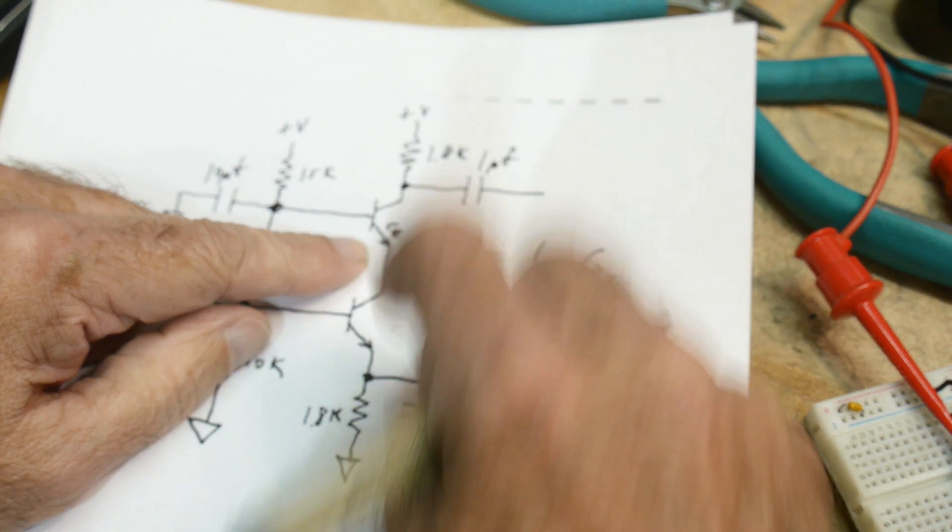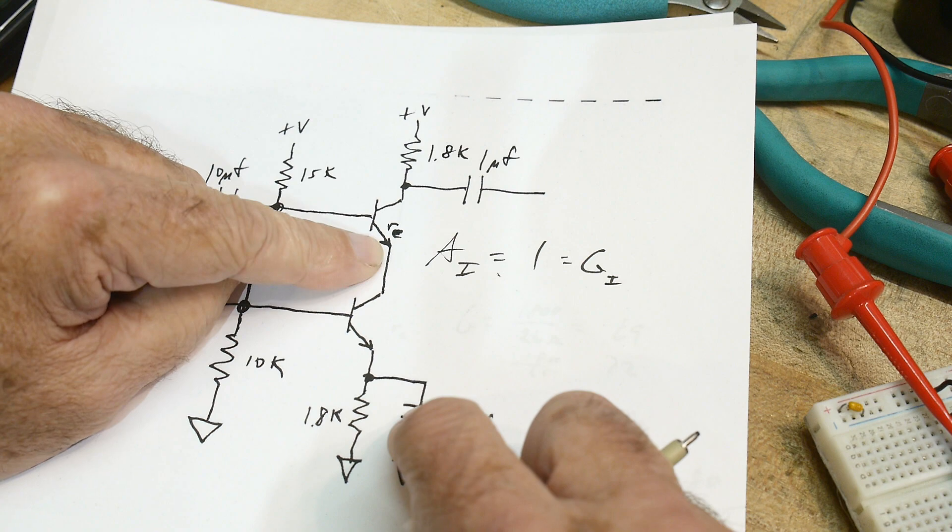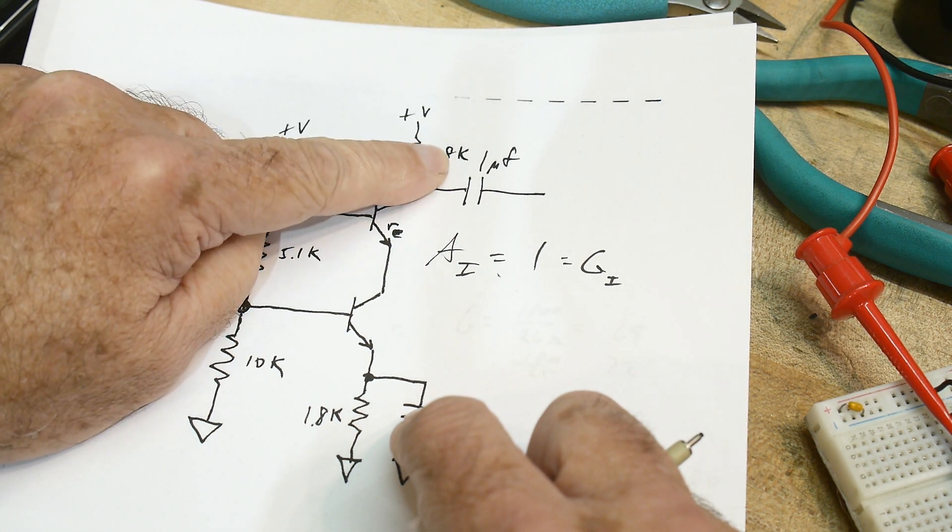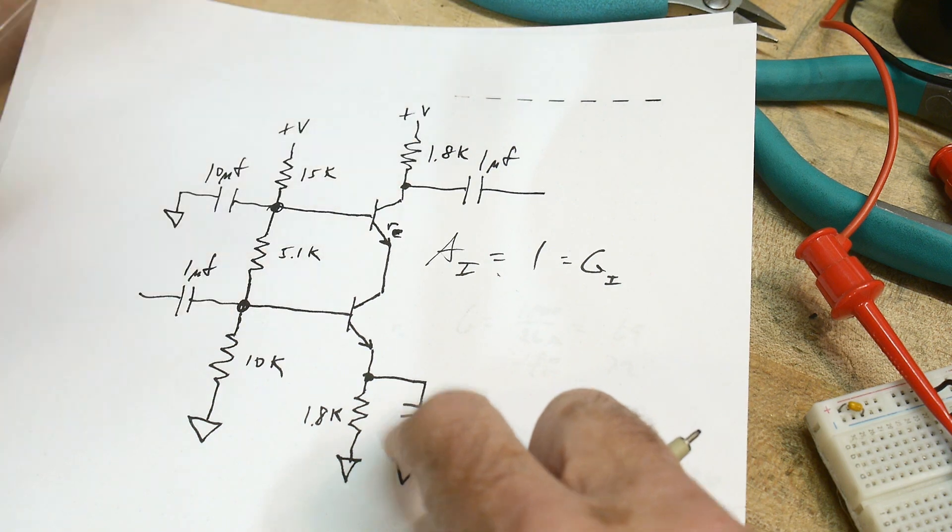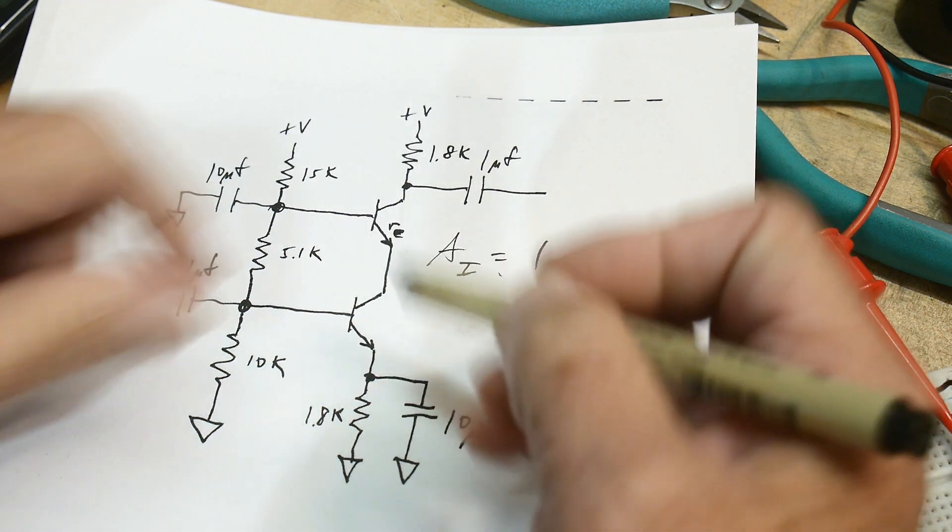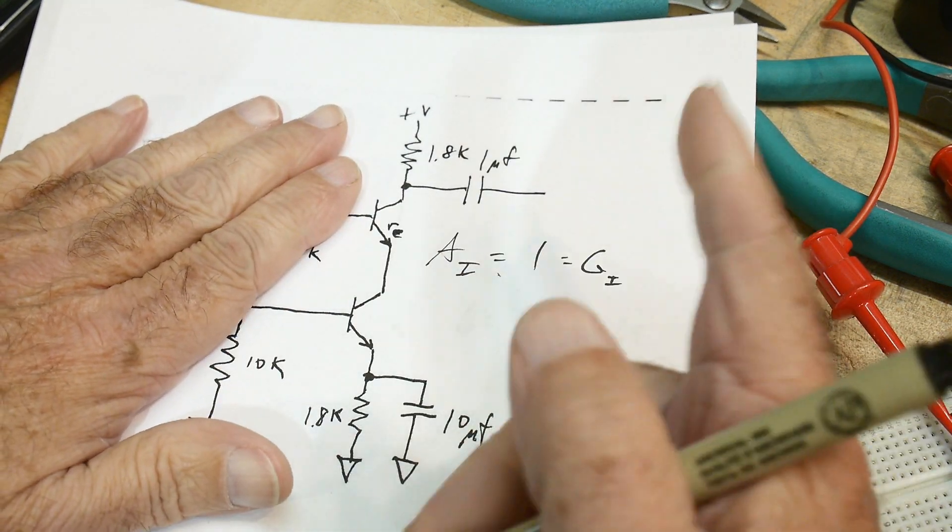The gain of a common base amplifier, again, is its resistor resistance, its emitter resistance. So how do you calculate the gain of a common base amplifier? Well, I'll point to the video down below.